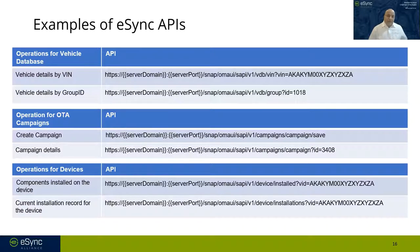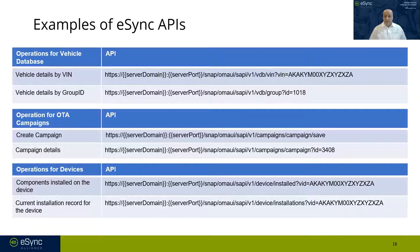Here are a few examples of the APIs — spanning vehicle database to OTA campaigns to operations of end devices. They are REST APIs, and more are being drawn to figure out how data aggregation will take place.